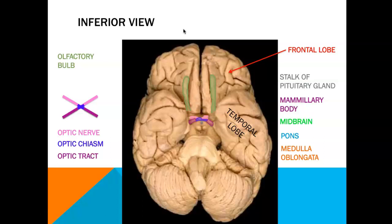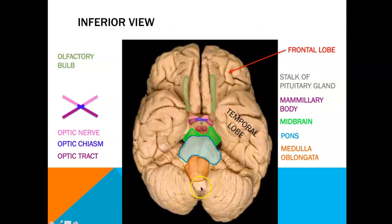Continuing posteriorly, that small gray dot in the center represents the stalk of the pituitary gland. Typically when we remove the brain from the cranium, the pituitary gland will stay in the cranial cavity. Posterior to this we find the mammillary body, and then we can start to see our brain stem structures: the midbrain, then the pons, and most inferiorly the medulla oblongata. Continuing down from the medulla oblongata is the spinal cord, and of course we have our cerebellum here.